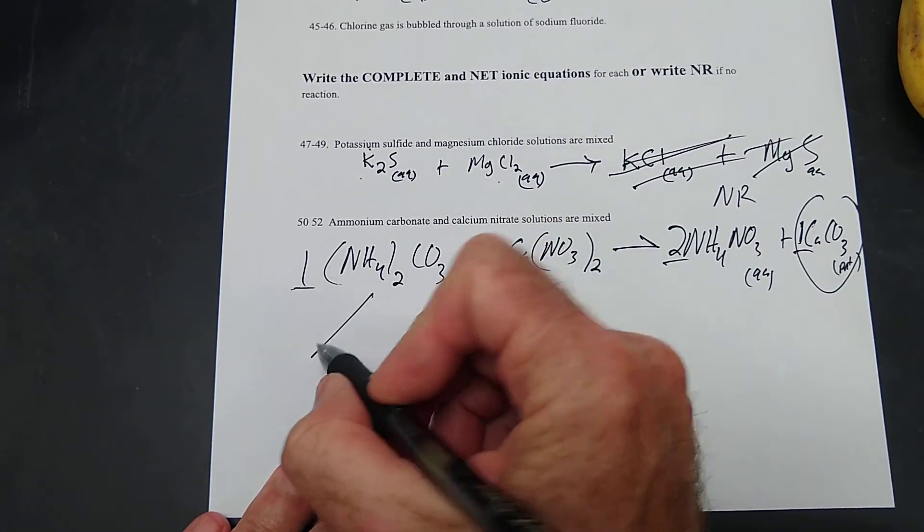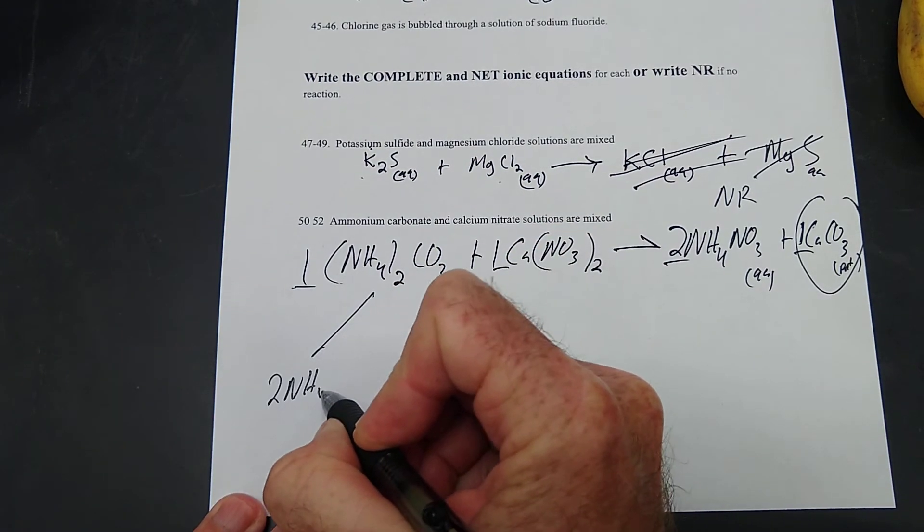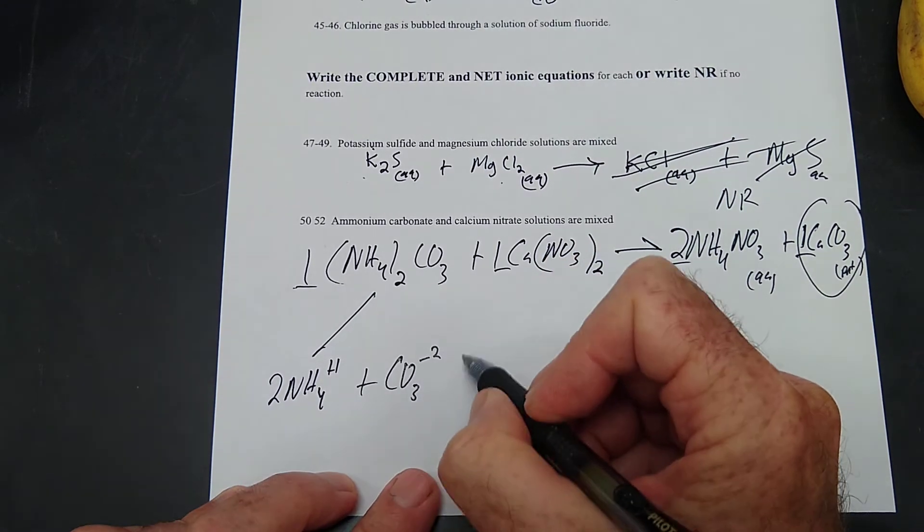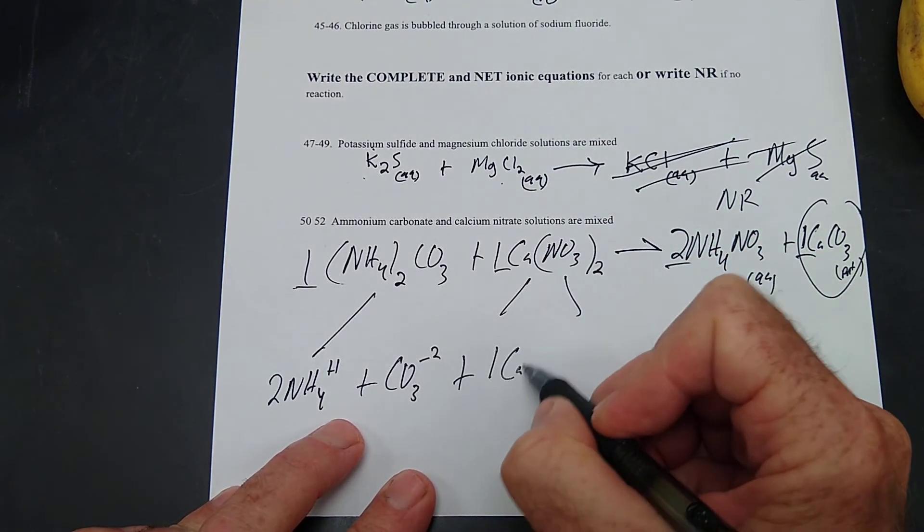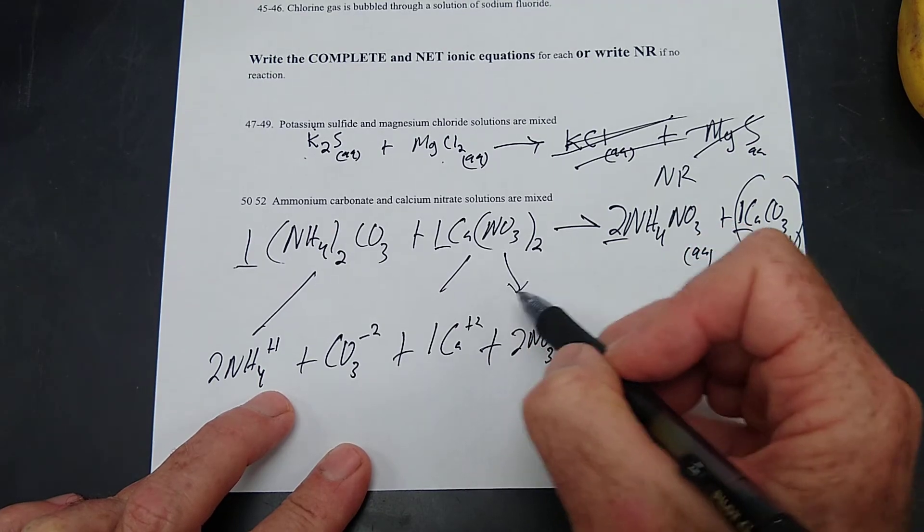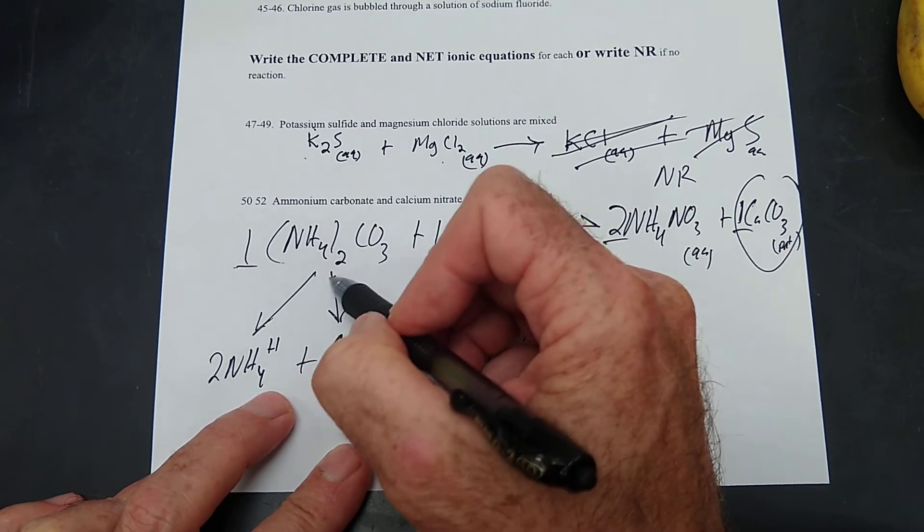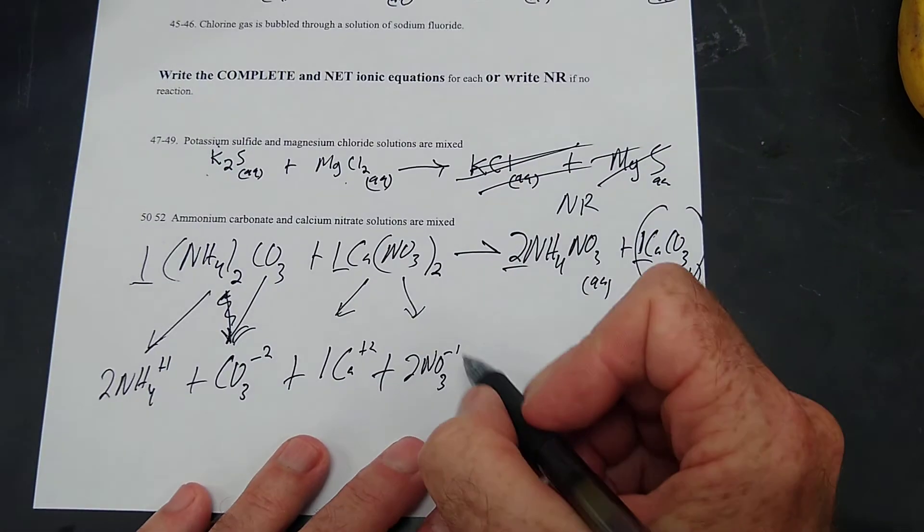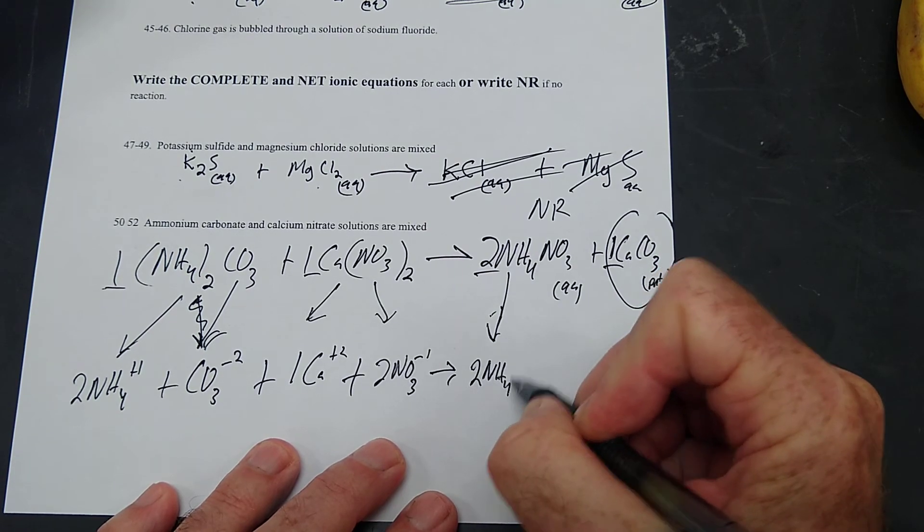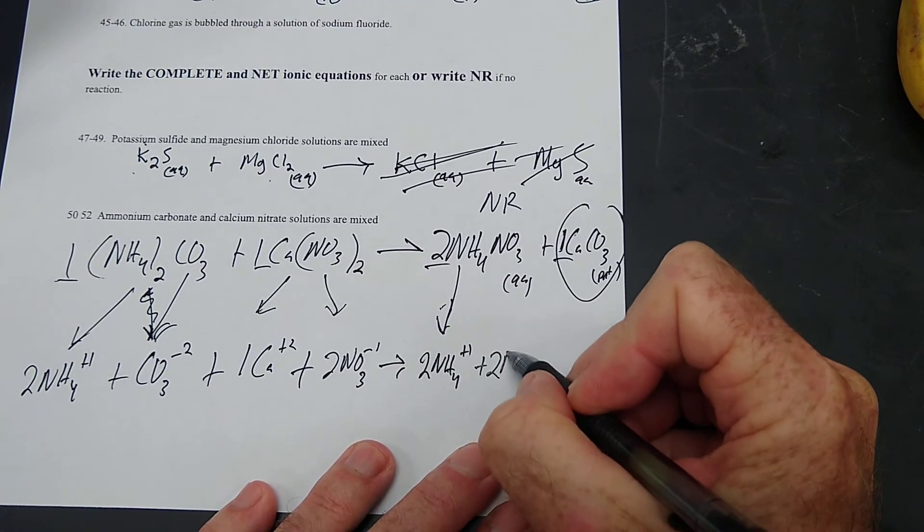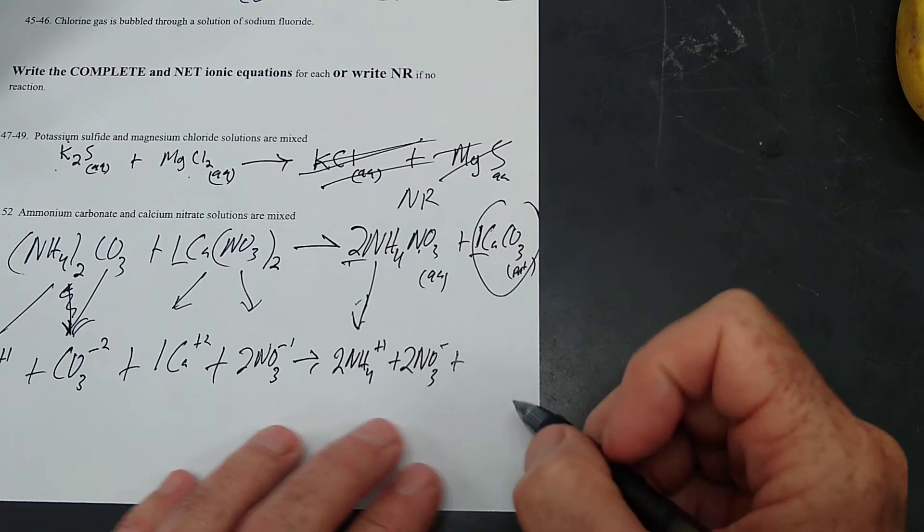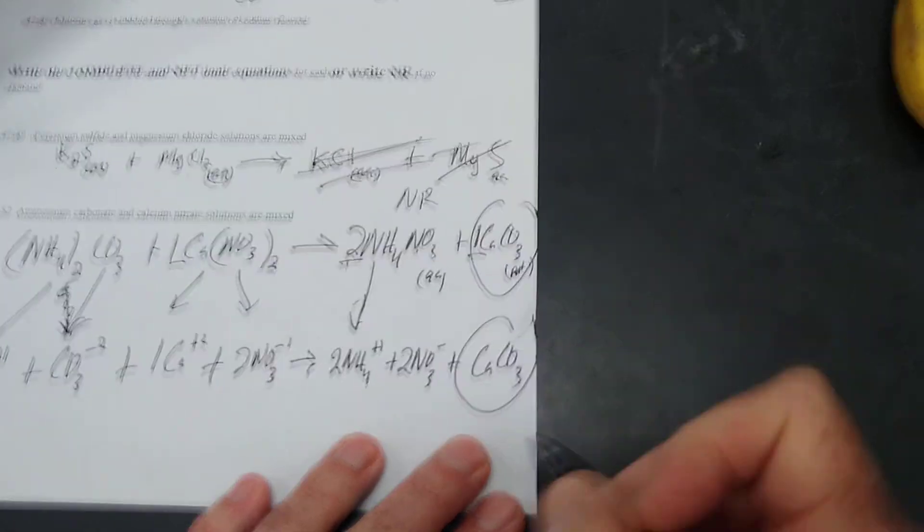Now we're going to split these up. I've got two NH4s that are plus one, and I've got a carbonate that's minus two, and I've got one calcium that's plus two, and two nitrates that are negative one. See what I'm doing? I'm just pulling out all these ions, all these ions that I have. And then that's going to give us two ammoniums that are plus one floating around in the water, and two nitrates - you'll see that two goes to that nitrate also - two nitrates that are negative one, and a calcium carbonate that's stuck together.